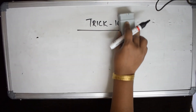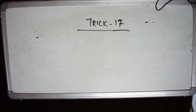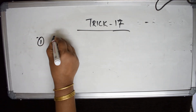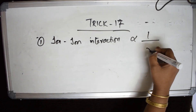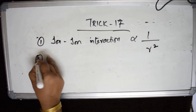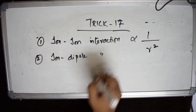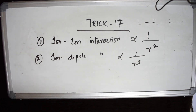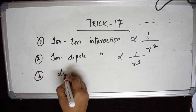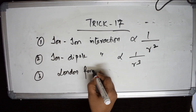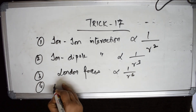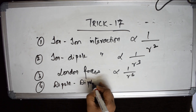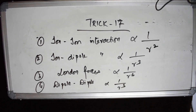Now trick 17 gives direct formulas for solving numericals on intermolecular interactions. Ion-ion interaction is inversely proportional to the square of its radius. Ion-dipole interaction is inversely proportional to the cube of its radius.